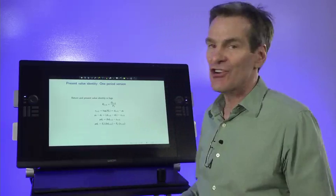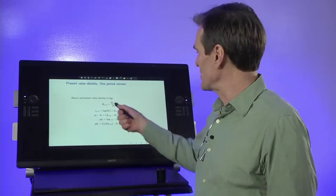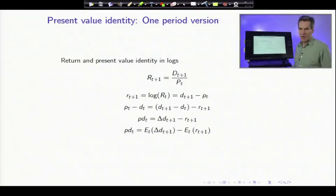So our first job is the linearized return identity from which the linearized present value identity follows. Really all we're going to do is take the definition of return. So return is dividend over price. This is for a security that only lasts one period. That's the simplifying assumption, no tomorrow's price in there. Take logs of both sides. So little letters stand for logs of big letters and same for dividend and price. So that just says little r is d minus p.